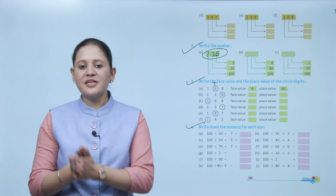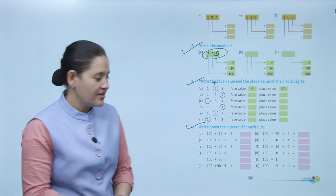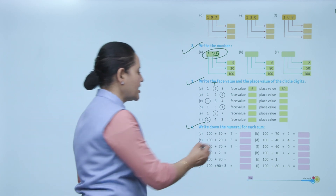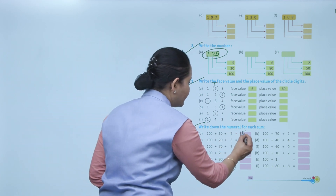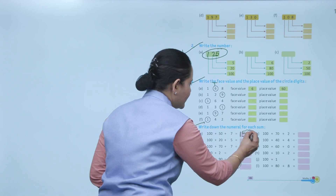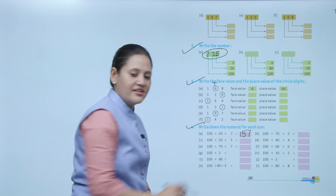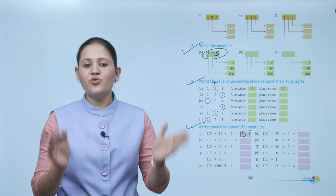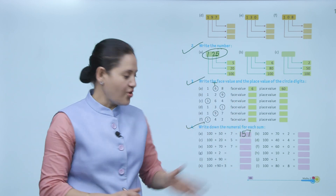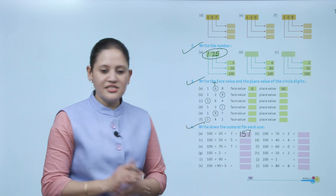Next: write down the numerals for each sum. 100 plus 50 plus 7 — so the answer is 157. Clear, so you have to practice all the questions.